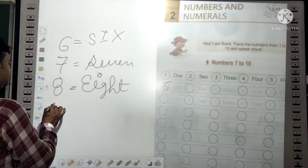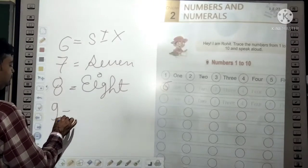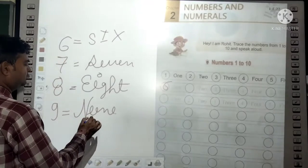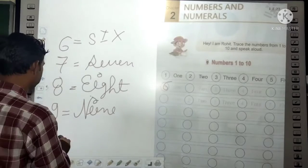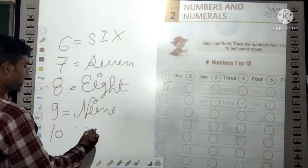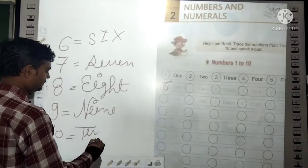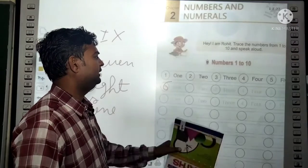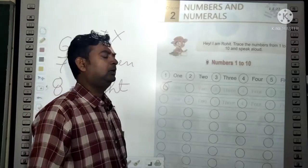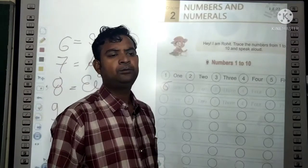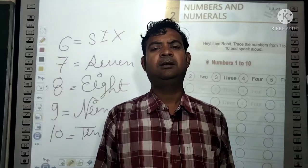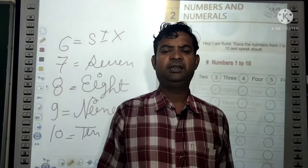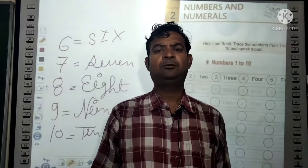The spelling of 9 is N-I-N-E. The spelling of 10 is T-E-N. So dear students, in this way you will write numbers 1 to 10. First, you will write the number 1, then its numeral name: O-N-E. In the same way, you will write 2 as T-W-O.